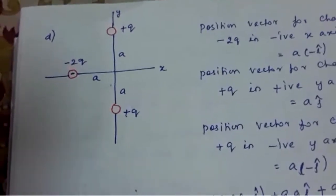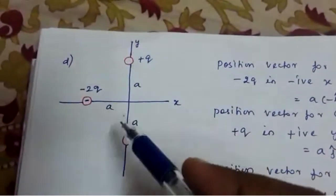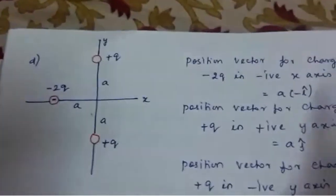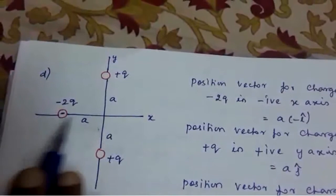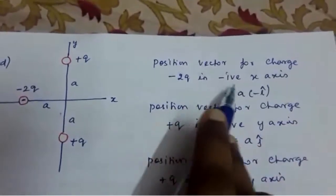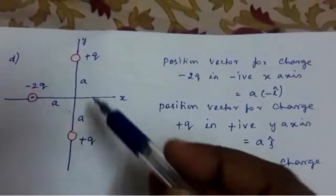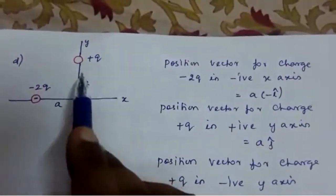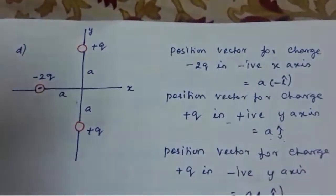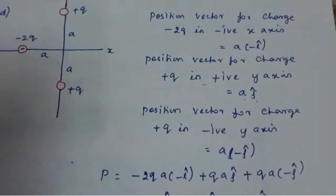Coming to the next diagram with three charges: one in the negative y-axis, one in the positive y-axis, and one in the negative x-axis. The position vector for charge -2q in the negative x-axis, distance a, is a into -î-vector. For charge +q in the positive y-axis, it is a into ĵ-vector. For +q in the negative y-axis, it is a into -ĵ-vector.